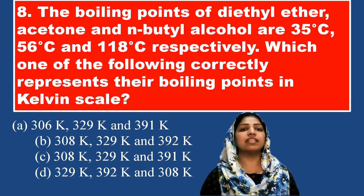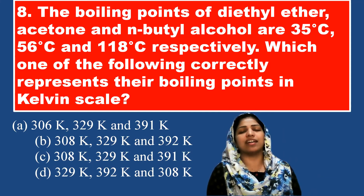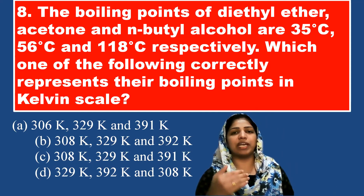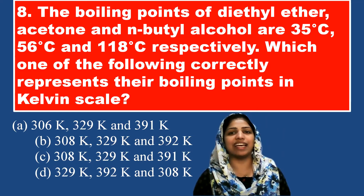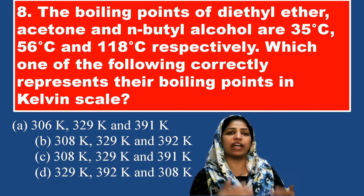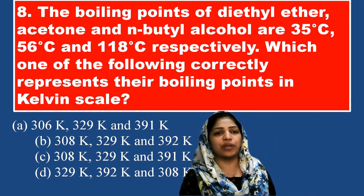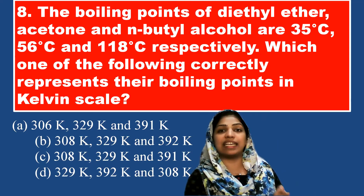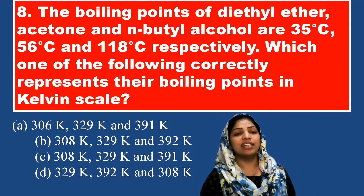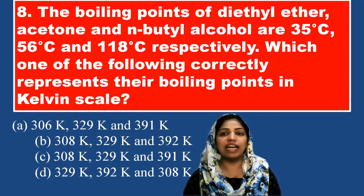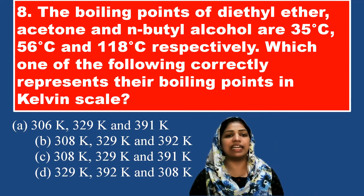Boiling points of diethyl ether, acetone, and normal butyl alcohol are given. We convert degrees Celsius to Kelvin. The values are 35°C, 56°C, and 118°C. For 35°C: 35 + 273 = 308 Kelvin.